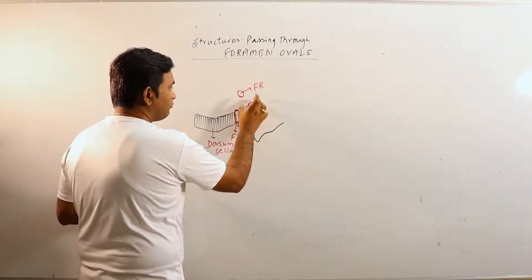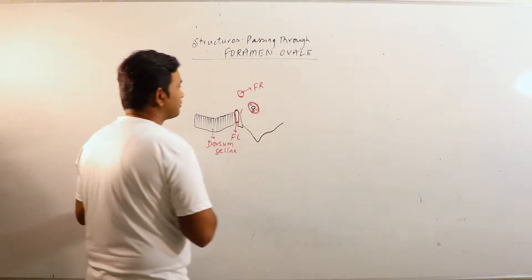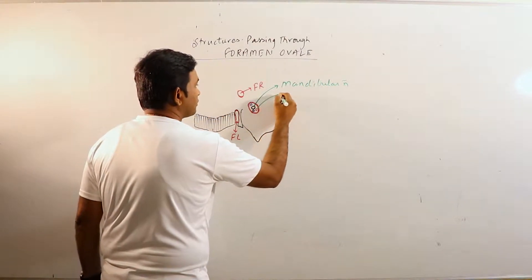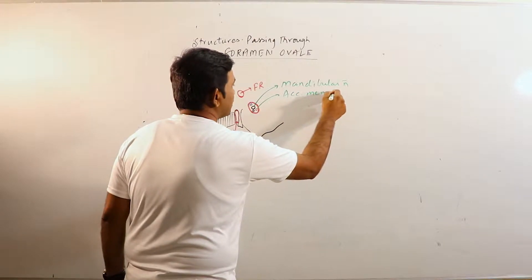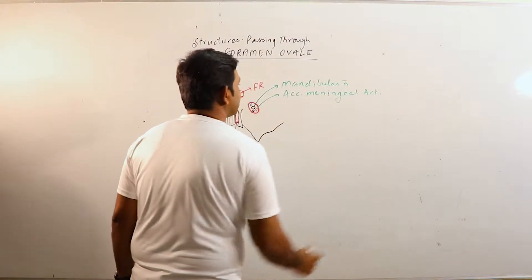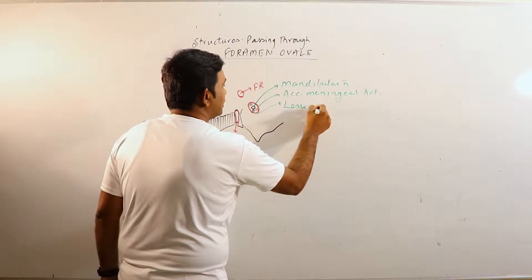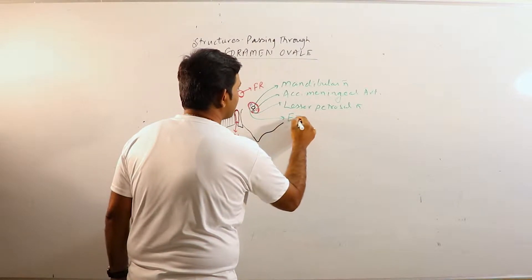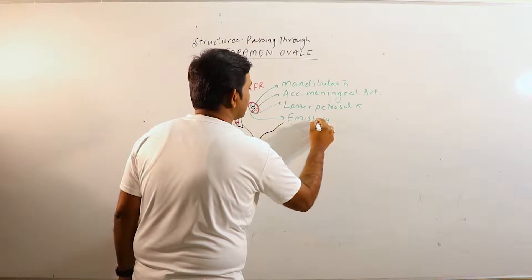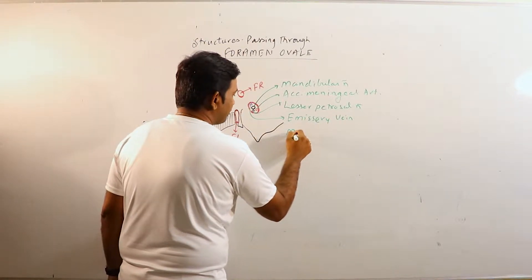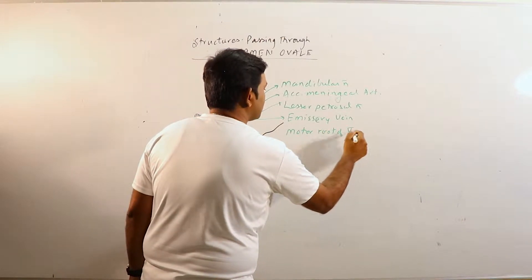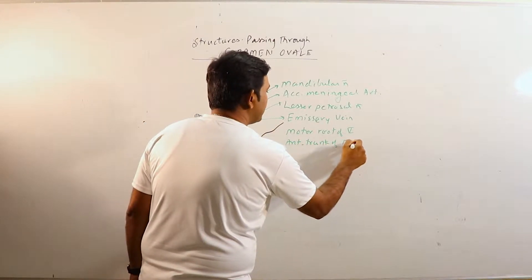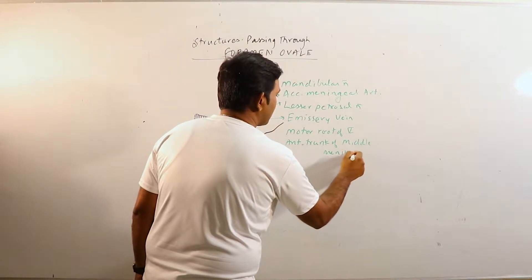Now this is the foramen ovale. Structures passing through the foramen ovale are: the mandibular nerve, the accessory meningeal artery, the lesser petrosal nerve, and the emissary vein. In addition, we can also have the motor root of trigeminal nerve and the anterior trunk of the middle meningeal vein.